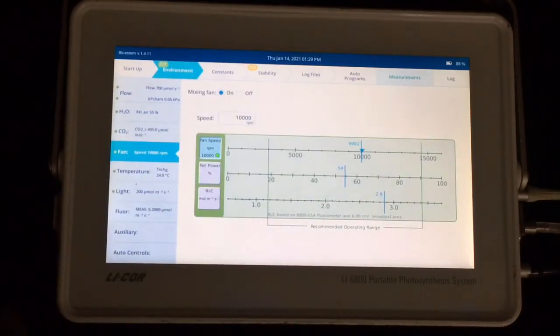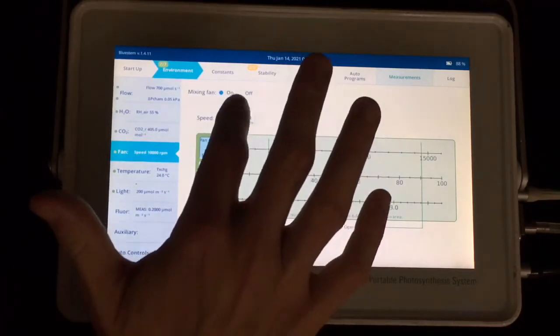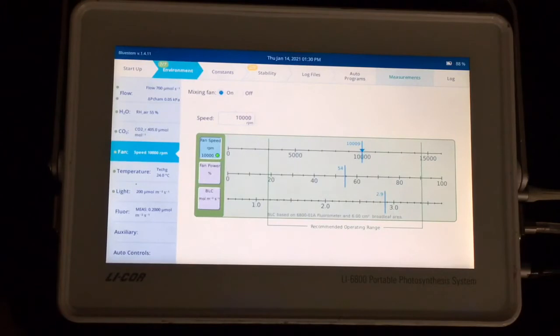Fan speed, this controls the boundary layer conductance, which we want to be as high as possible for a better estimate of stomatal conductance. And a typical choice is about 10,000 rpm, which will really strip that boundary layer.